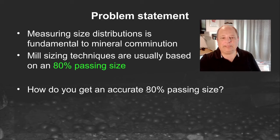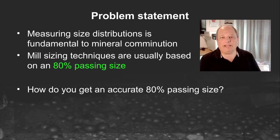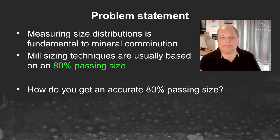Measuring a size distribution is fundamental to mineral comminution, and most of the mineral grinding system designs that we do are based on an 80% passing size. The problem statement is: how do you get an accurate 80% passing size?